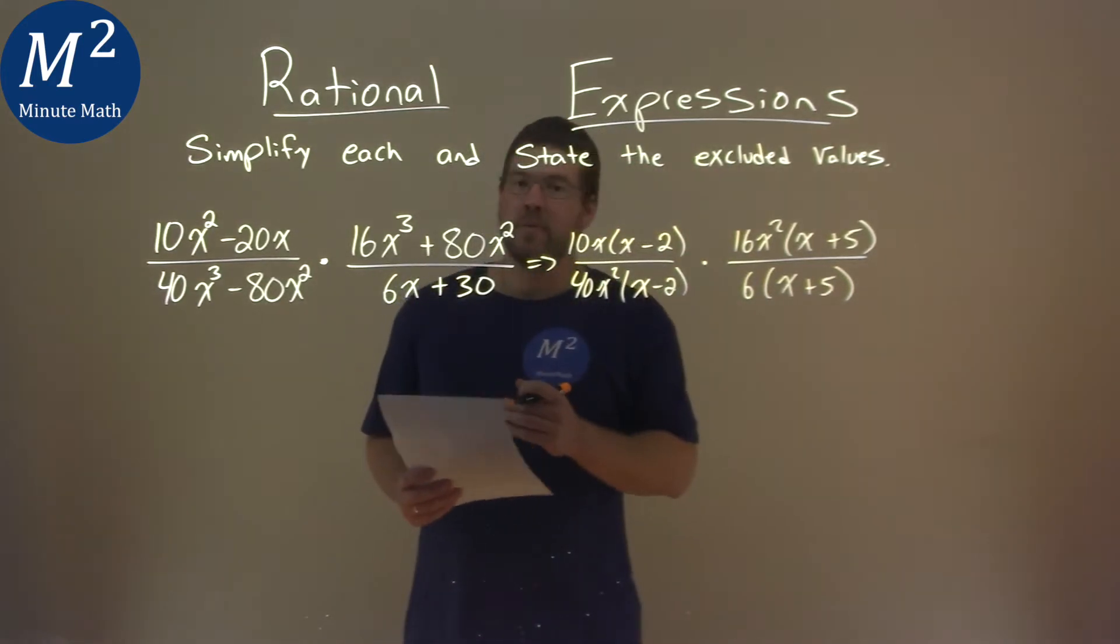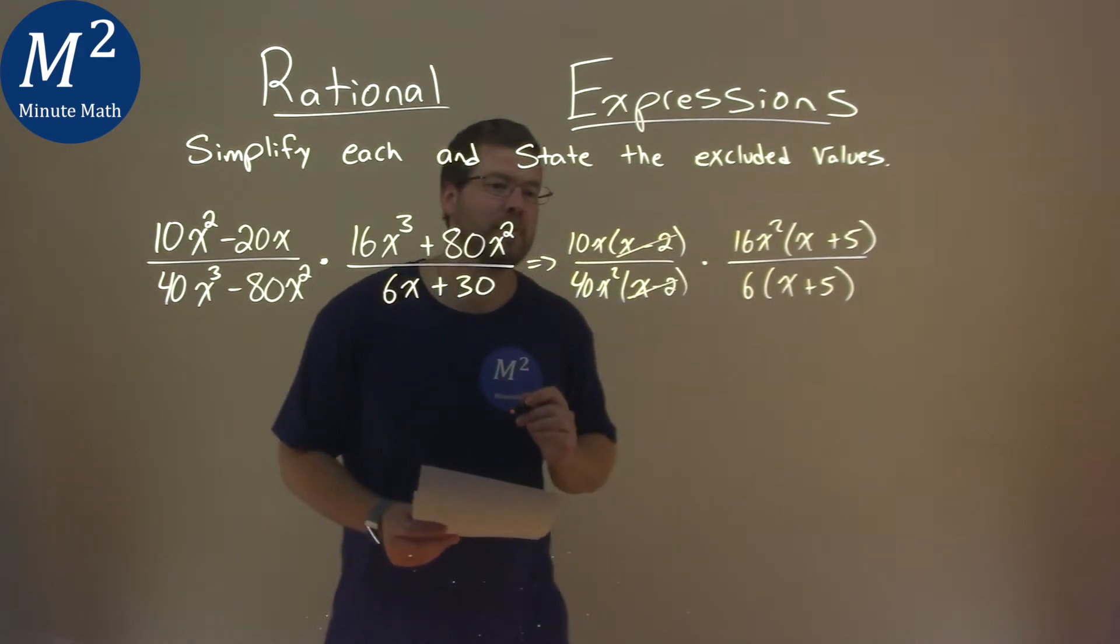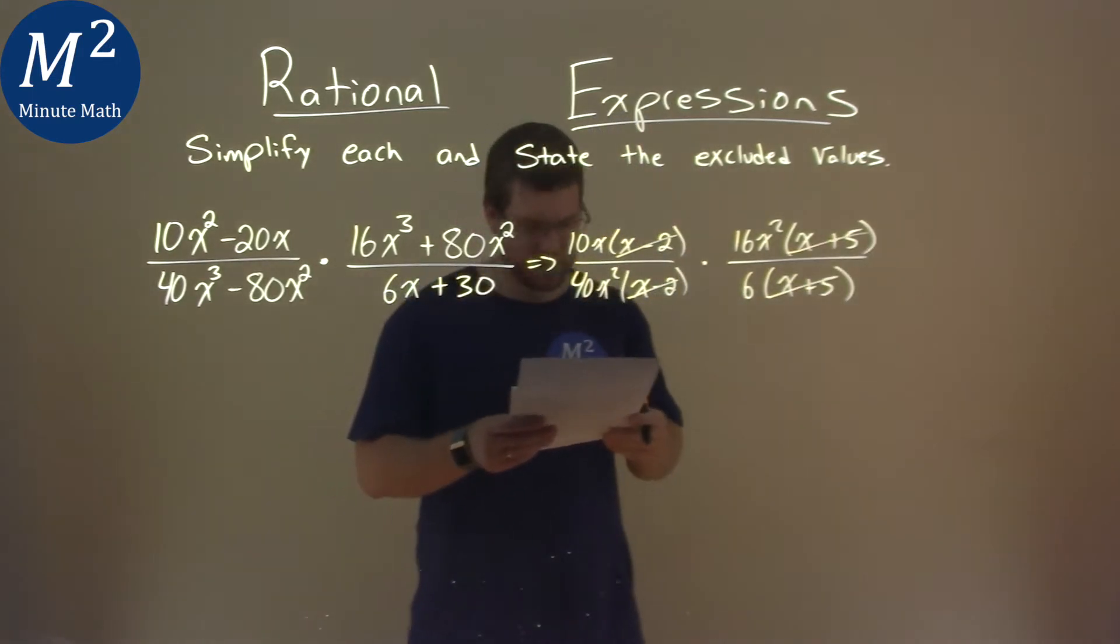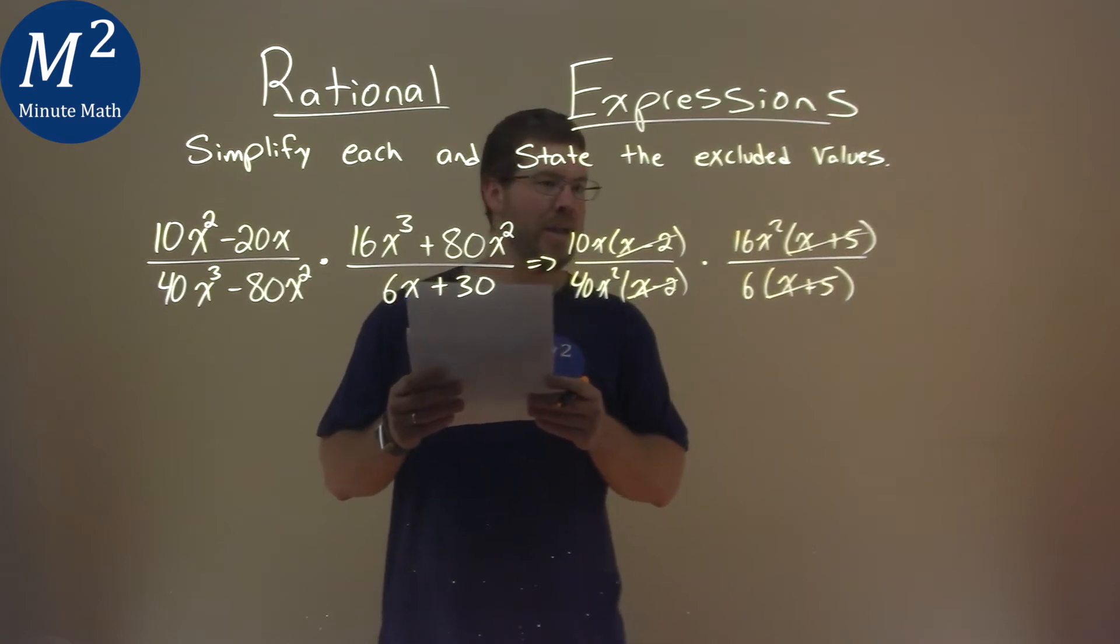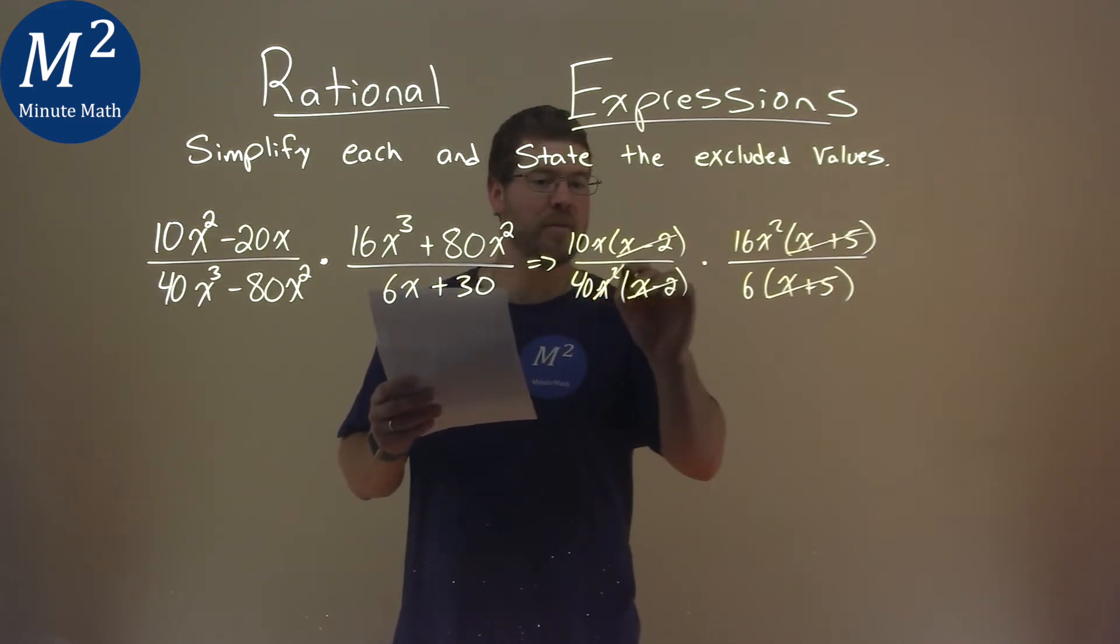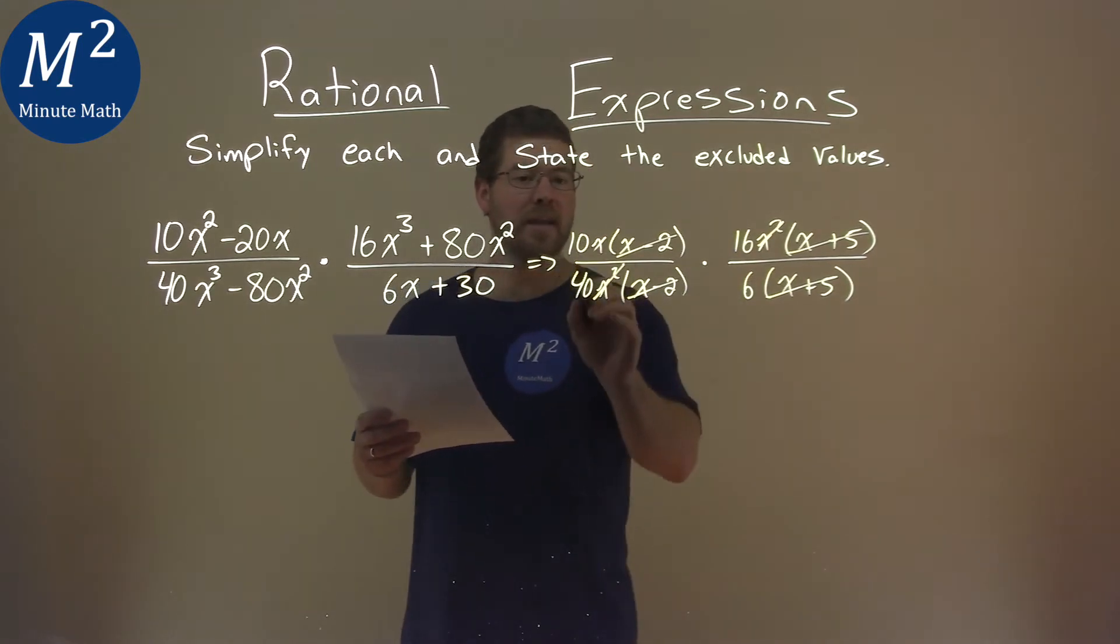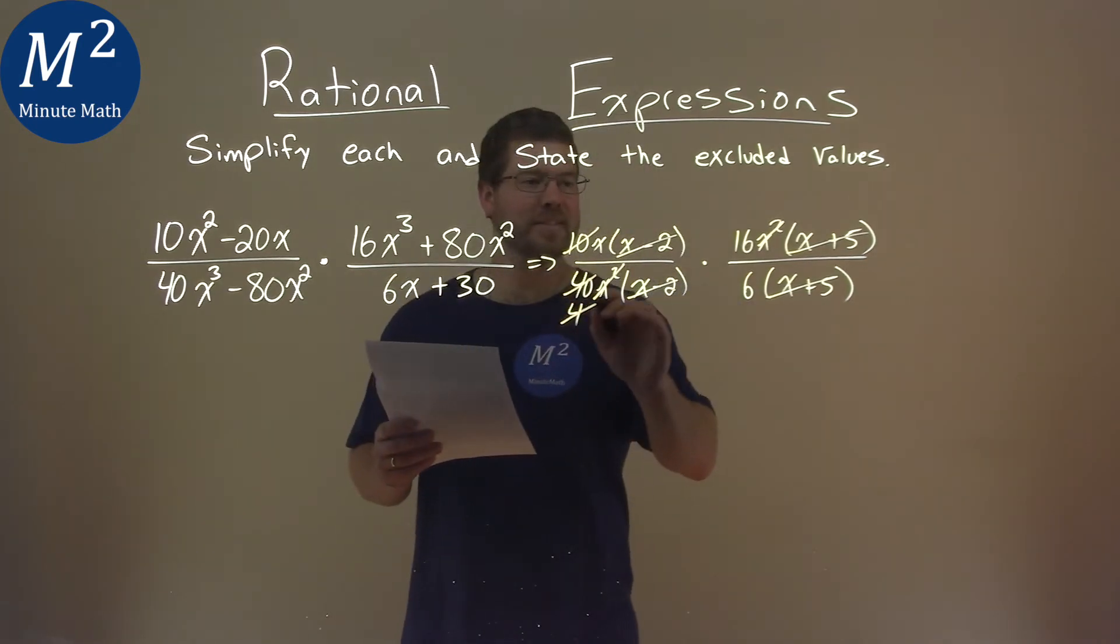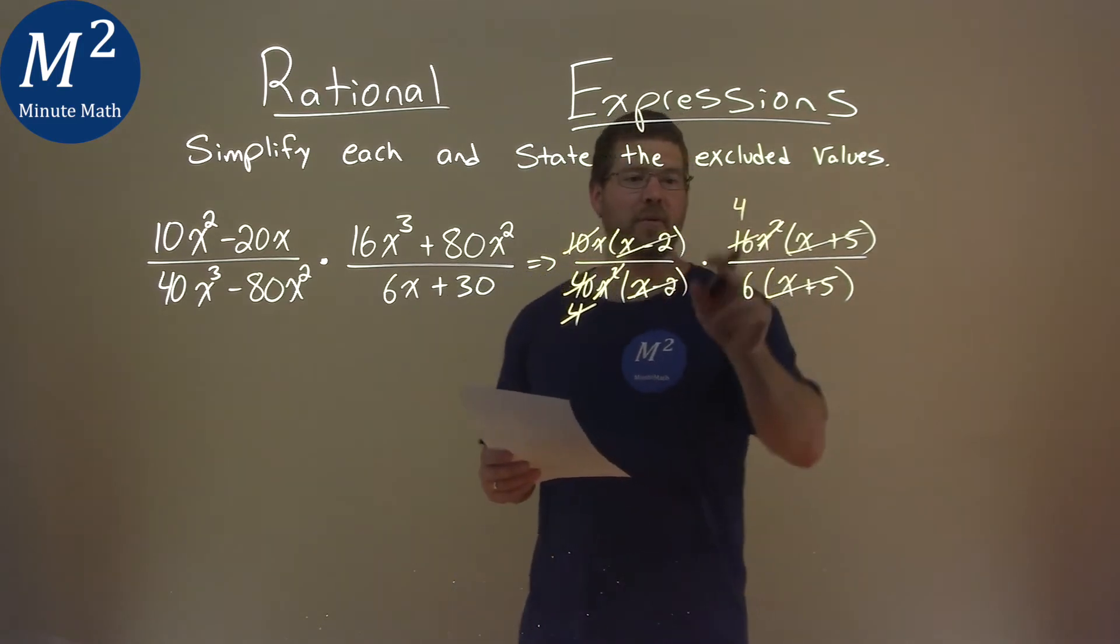So now we're going to cross off where we can. x minus 2, x minus 2 can be crossed off here. x plus 5 gets crossed off. This x plus 5 gets crossed off as well. Anything else? Well, I see an x squared, and an x squared can cross off right there. The 10 and the 4, I can cross off the 10, and this becomes just a 4 there. A 4 goes into the 16 four times, so I'm going to do that there.